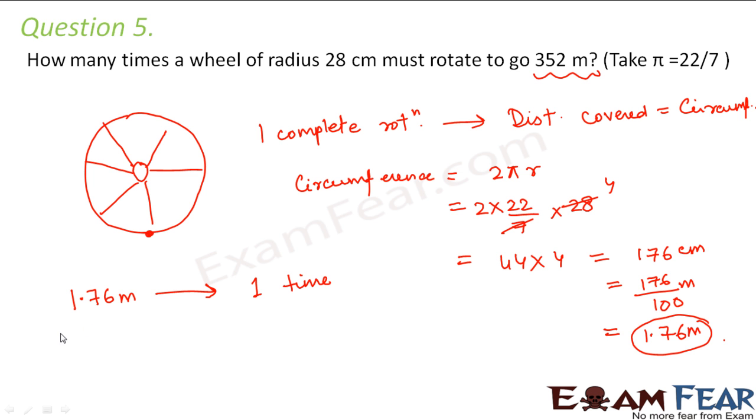That means to cover this much distance, the circumference, it rotates one time. Therefore, to cover 352 meters, how many times would it rotate? It would rotate 352 divided by 1.76. When you calculate this, it comes out to be 200. Therefore it needs to rotate 200 times in order to cover 352 meters.